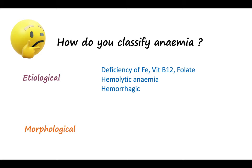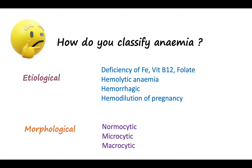Anemia may also result from acute or chronic blood loss — hemorrhagic — such as GI bleeding, or from hemodilution of pregnancy. In pregnancy, the blood volume increases greatly while RBC count remains the same, so it appears that the RBC count is relatively less. Morphologically: normocytic means the same size as normal RBCs, microcytic means smaller, and macrocytic means larger than normal.